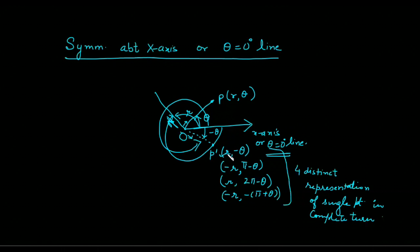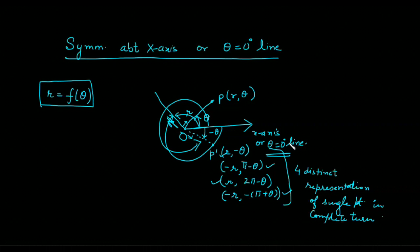Now we need to check all these points. Let's suppose the curve is r equals some function of theta. If we want to check that this polar graph is symmetrical about the x-axis, we check these four representations. We first put in the point (r, −θ) by replacing r with r and theta with minus theta in the main function. If the left-hand side equals the right-hand side, it means this point lies on the curve. If not satisfying, check the second one, then the third, then the fourth.